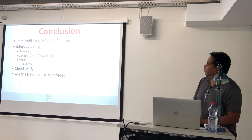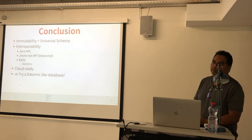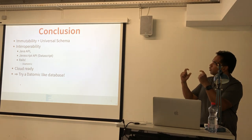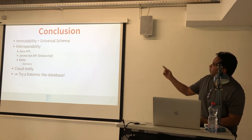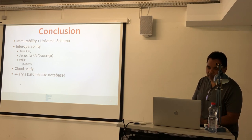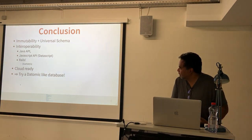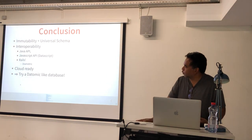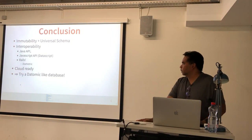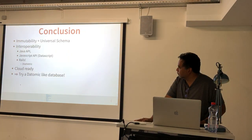To summarize, what makes Datomic special is the combination of immutability and the universal schema — the triple — which together produce all the interesting properties described: history, auditability, flexible schema, time travel, read scaling, and no N+1 issues. Datomic is interoperable with Java and is a JVM project. For JavaScript, use Datascript. Someone has also written a gem for Ruby and Rails. There's also a cloud-ready version of Datomic available. Hopefully this was interesting, and I encourage you to try Datomic or one of its open source alternatives.